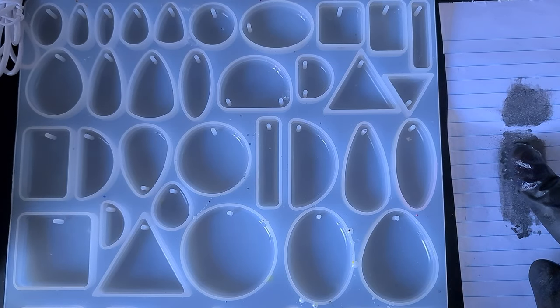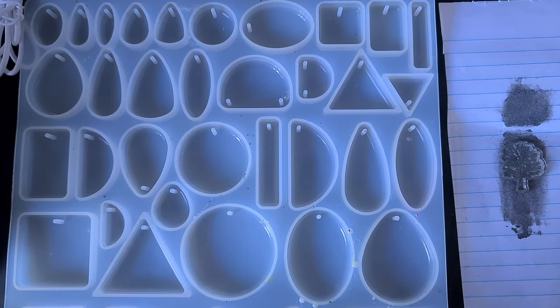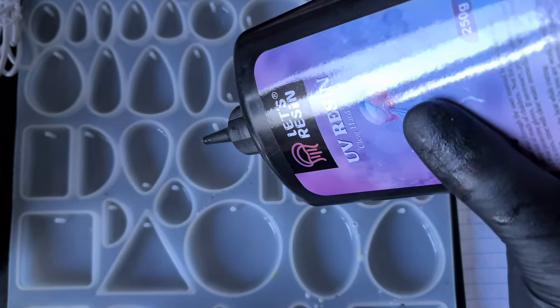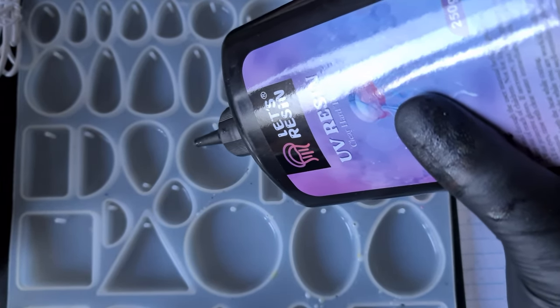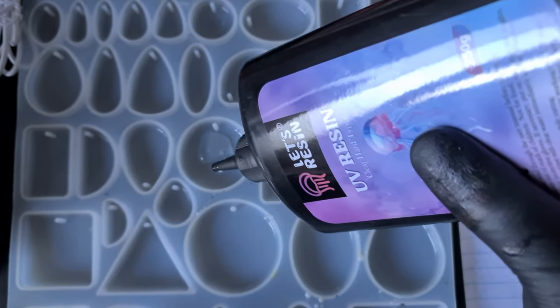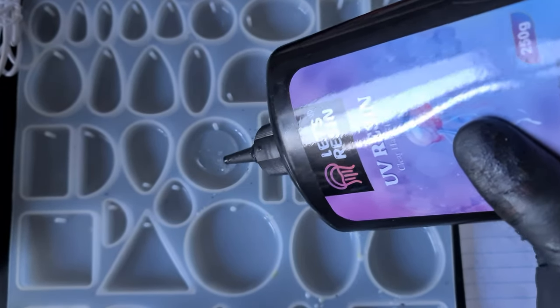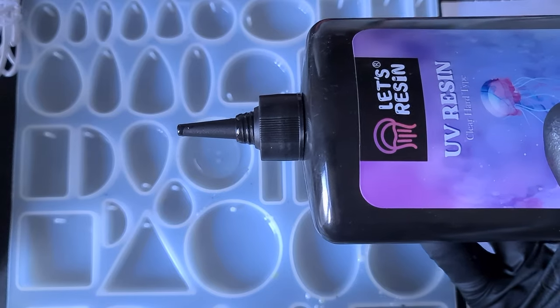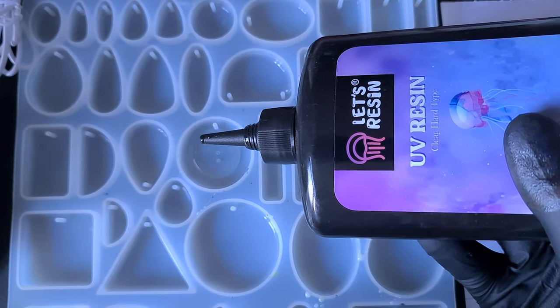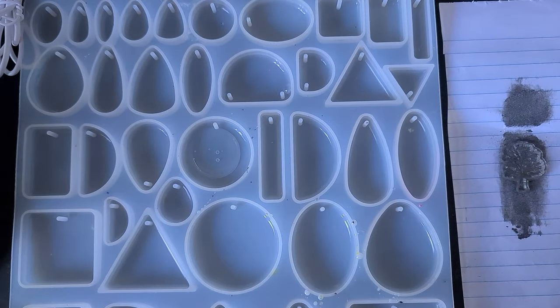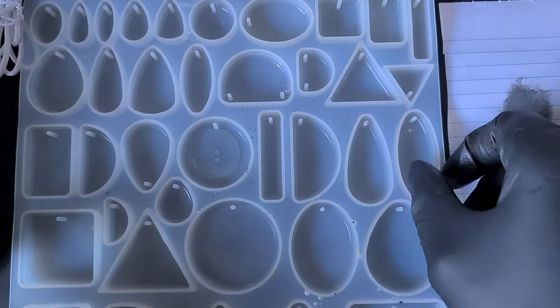So that is then covering our tree with mica powder. On to the next stage, we're just going to start with a thin layer of our UV resin. Again, if you've got two-part you just do this section with your two-part. We don't want that too deep and we're just going to spread that around.